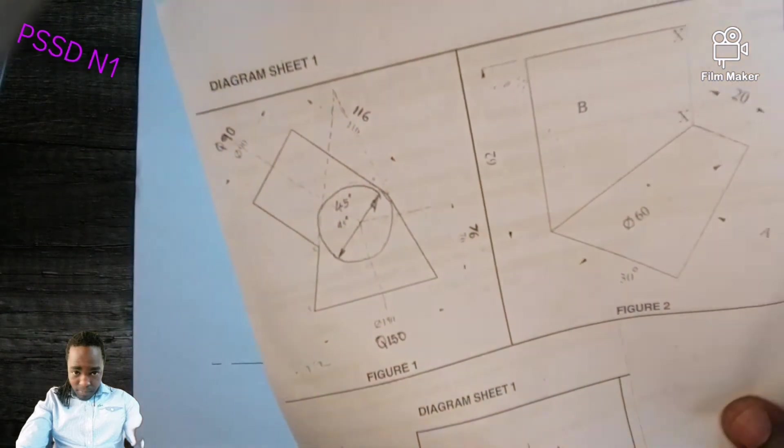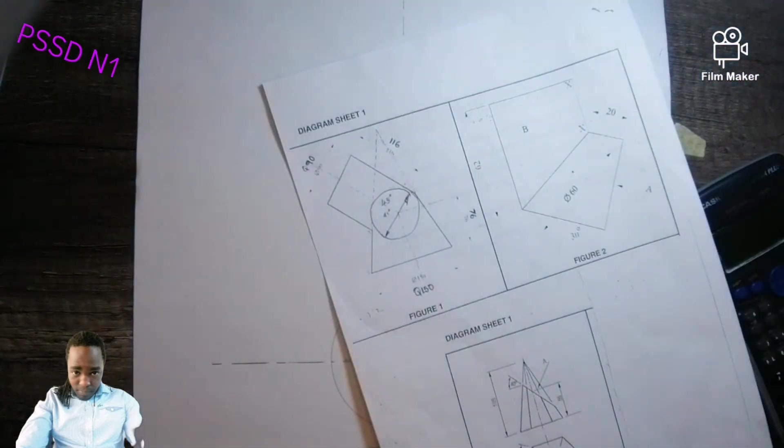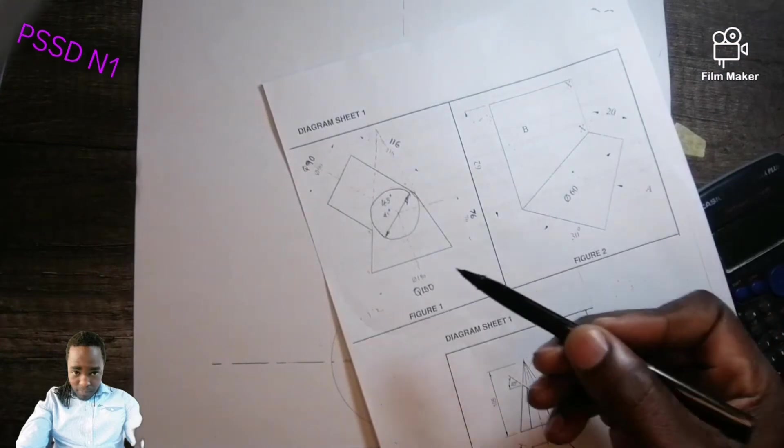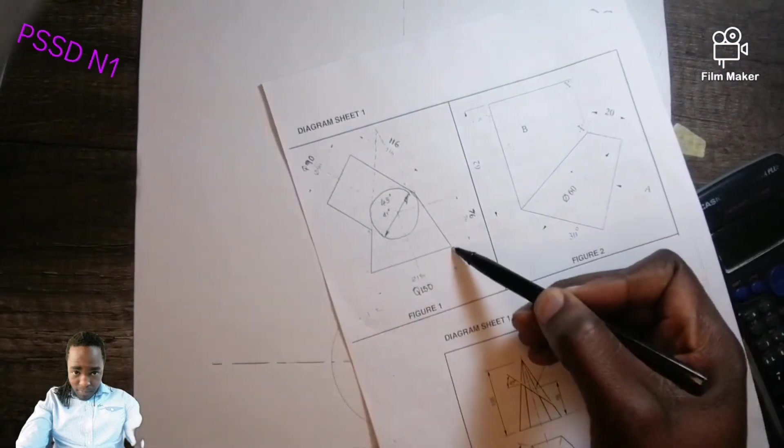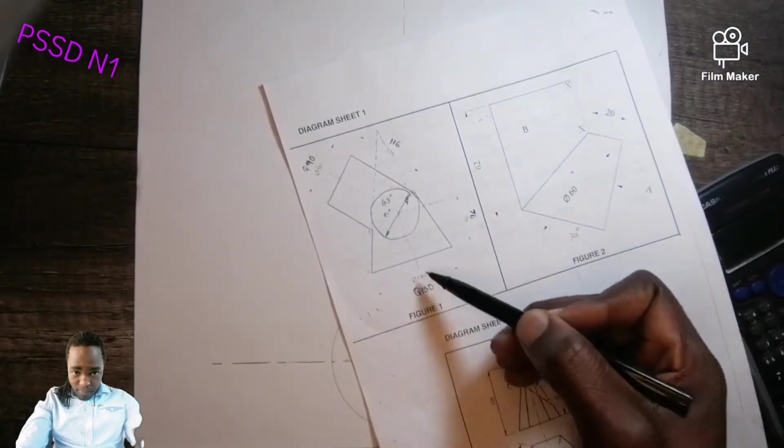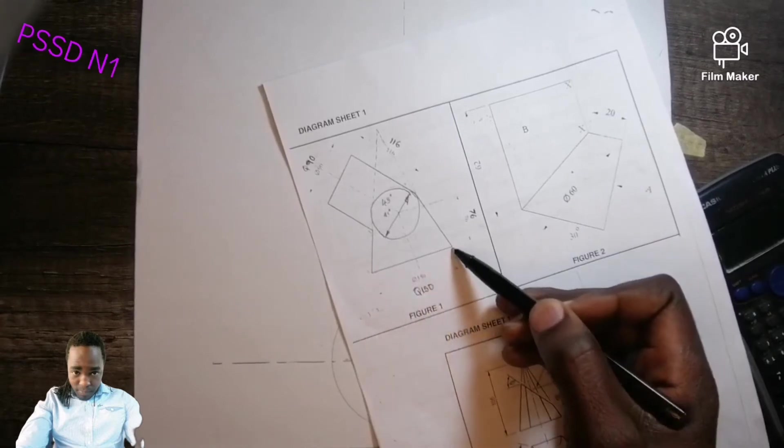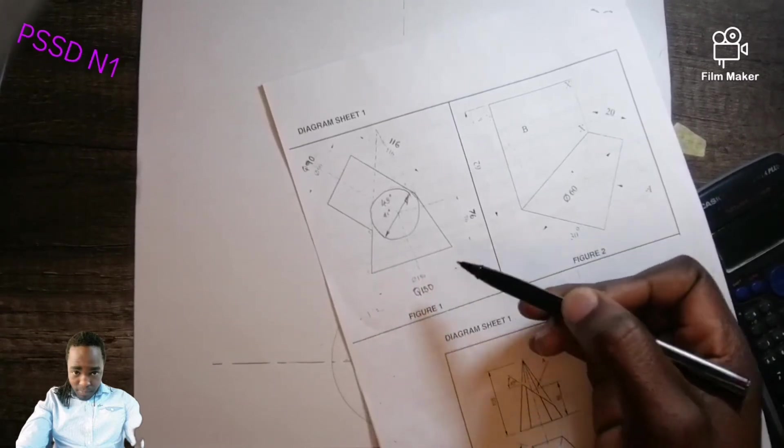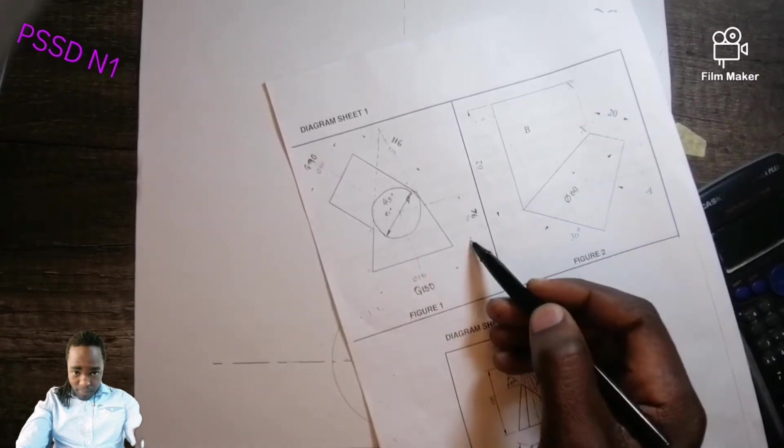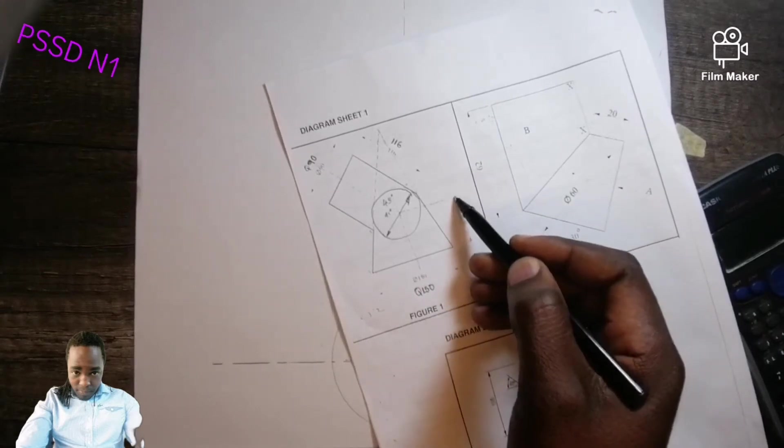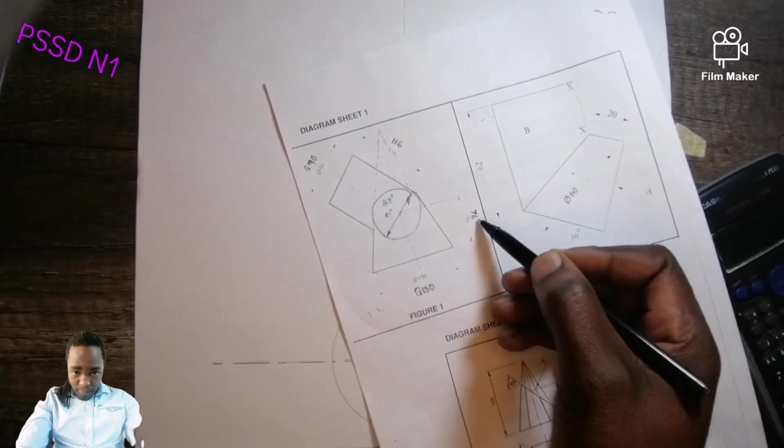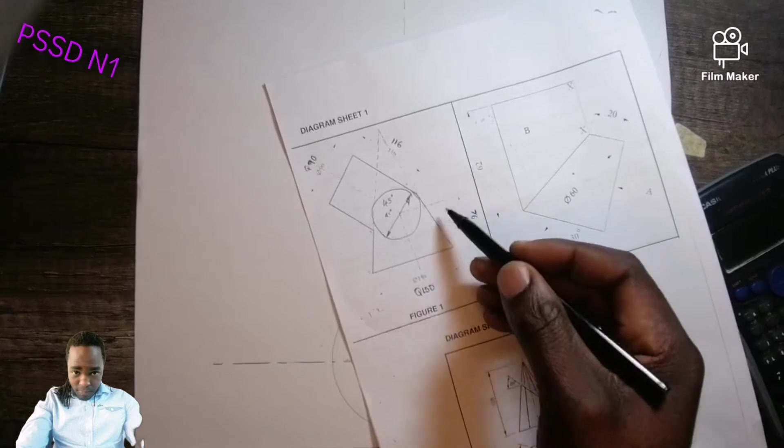Let me try to show you clearly the dimensions because they are not clear. From here till here is diameter 150. From here till here is diameter 150. Then from here till the center is 76 millimeter.